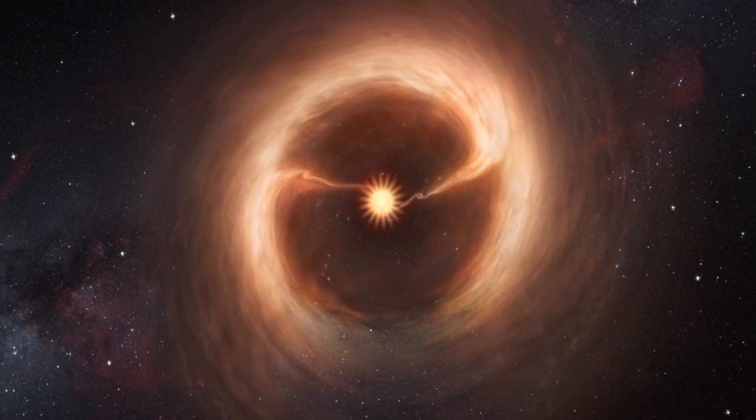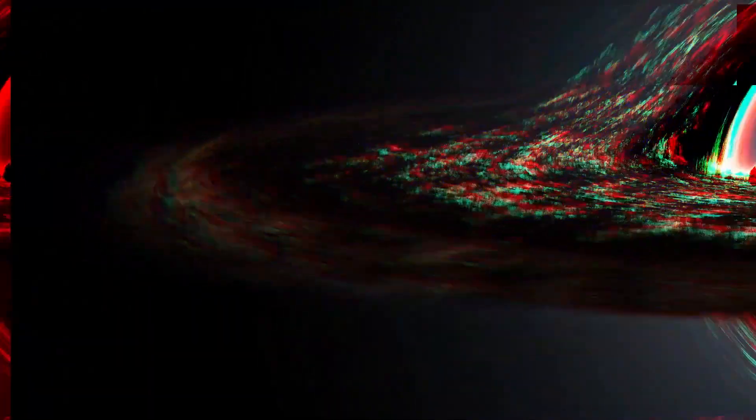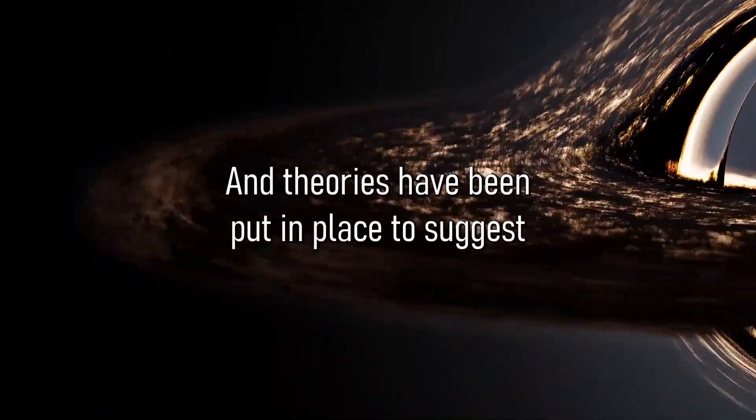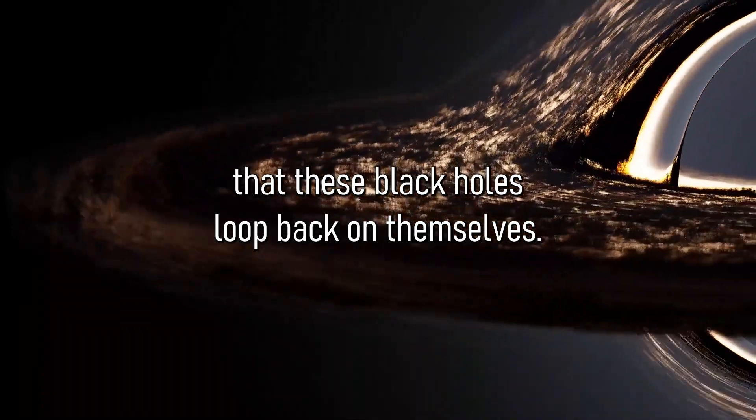Black holes are characterized by the Event Horizon, which is the boundary around a black hole where nothing, not even light, can escape. And theories have been put in place to suggest that these black holes loop back on themselves.